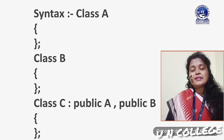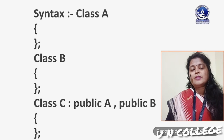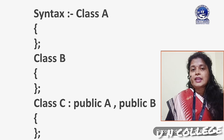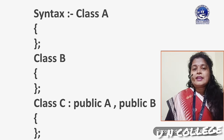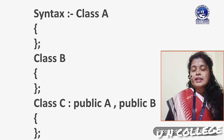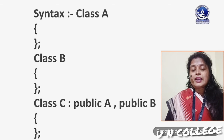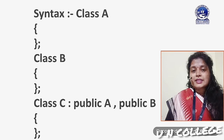Here I have represented the syntax for declaring multiple inheritance. Suppose we are using three classes: class A and class B are the base classes and C is the derived class. The syntax will be: class A with its body, then class B with its body, then class C colon public A comma public B. Class A and B are independent of each other, but class C is derived from both class A and class B.